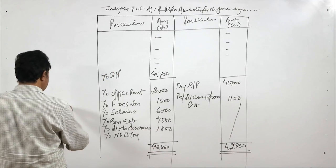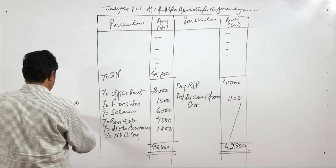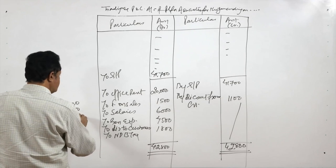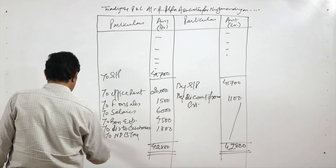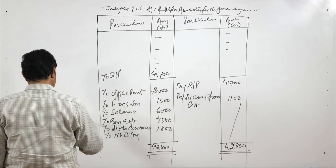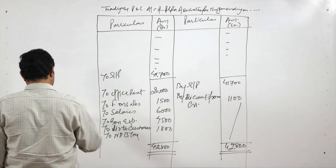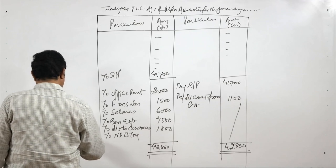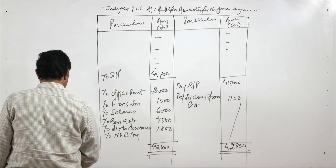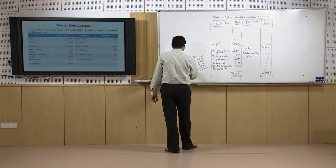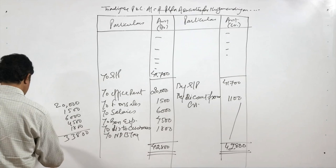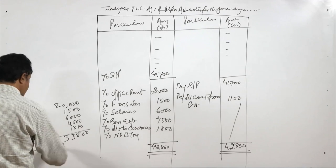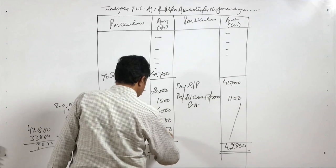Let me calculate: expenses are 20,000 + 1,500 + 6,000 + 4,500 + 1,800 = 33,800 rupees. Income side is 42,800 rupees. The difference is 9,000 rupees — that is the net profit before tax. If a corporate tax of 3,000 rupees were to be paid, the net profit after tax would be 6,000 rupees. But if no tax applies, 9,000 rupees is the net profit after tax.